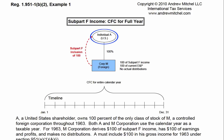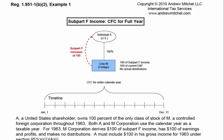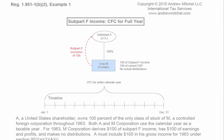Since Individual A owned the shares of Corp. M for the entire year, A's pro-rata share of the subpart F income is 100%, and A must include the full $100 of subpart F income in her income for 1963.